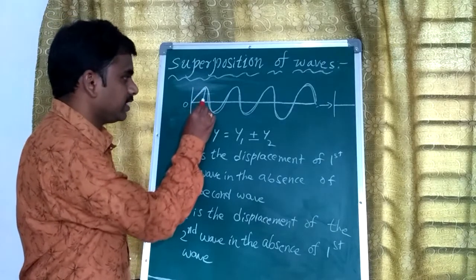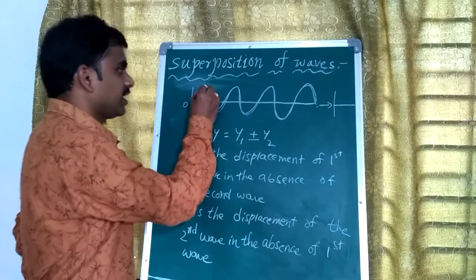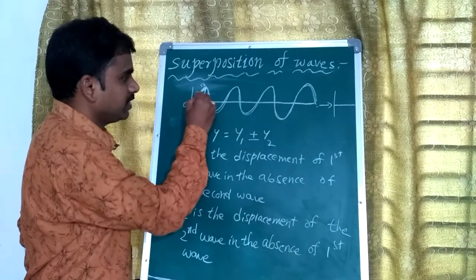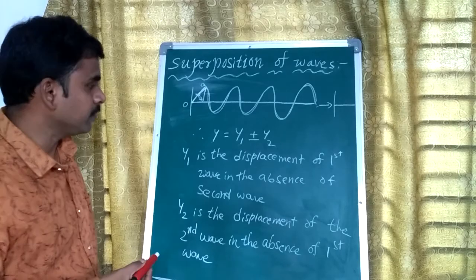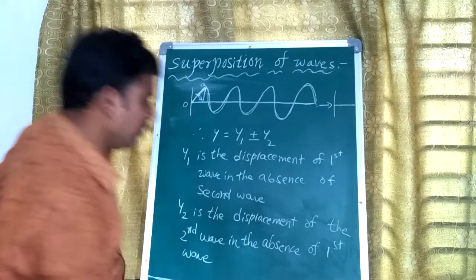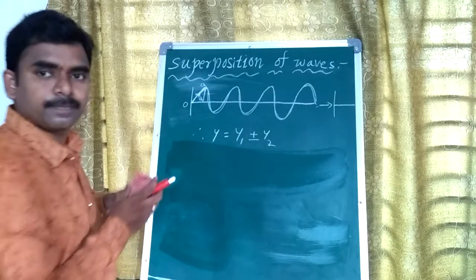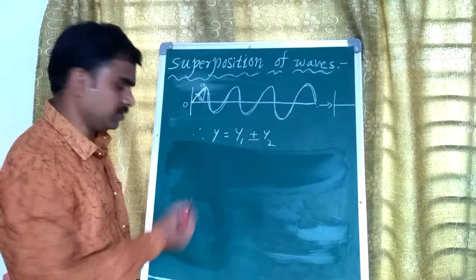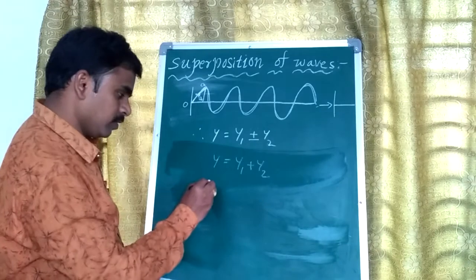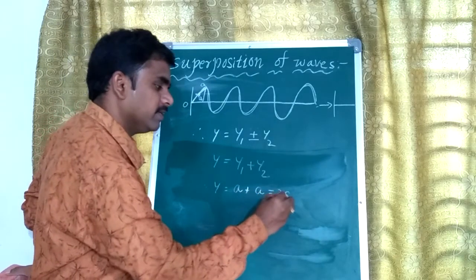For example, if we take the maximum displacement of the first wave — also called amplitude A — and the second wave also has amplitude A. Here both the waves are traveling in the same phase, maintaining the same phase and traveling in the same direction. So we take the positive sign: Y equals Y1 plus Y2. Therefore Y equals A plus A, which equals 2A.